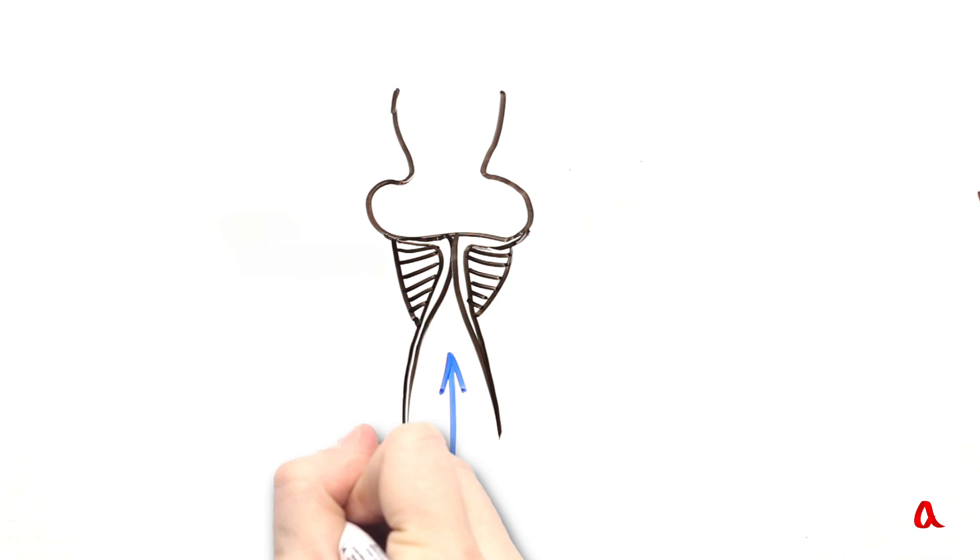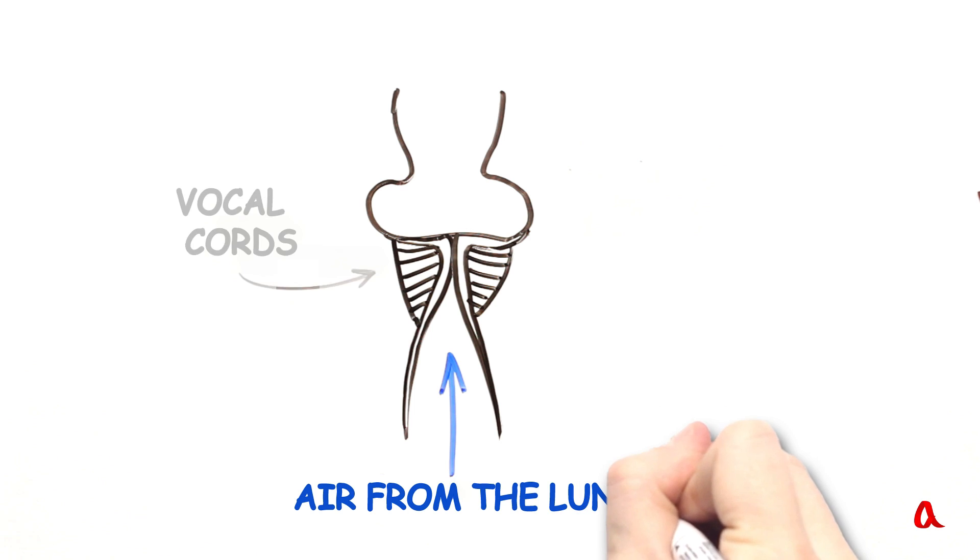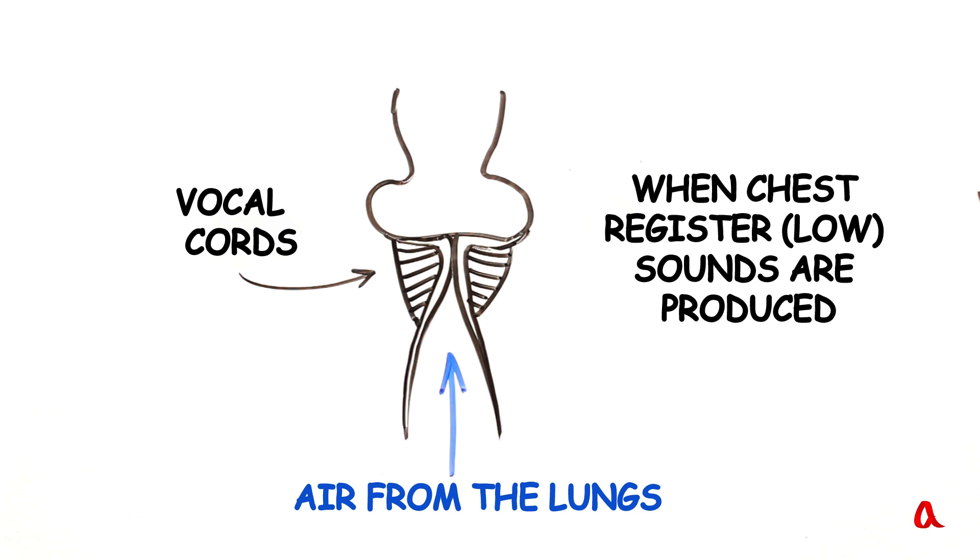Vocal cords are specific muscles. When the air from the lungs passes between the vocal cords through the glottis, it makes the cords vibrate. Changing the tension of the cords, we change the pitch of the sound.